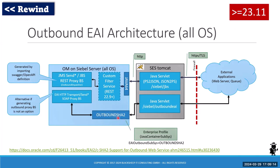Now fast-forward to 23.11, where Oracle introduced the ability to use another servlet — the outbound EAI servlet — which is in a second profile called 'outbound SHA2', hinting at the encryption possible through that channel. On Windows, this is now possible to use. I tested it using a recent version of Siebel, and Windows starts using that servlet, so traffic goes through your SCS Tomcat like on Linux or Unix. That's Oracle's intention to streamline the outbound EAI architecture.